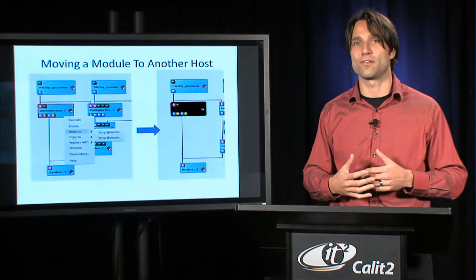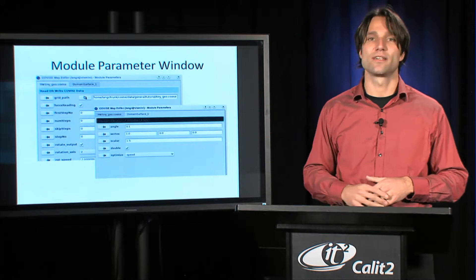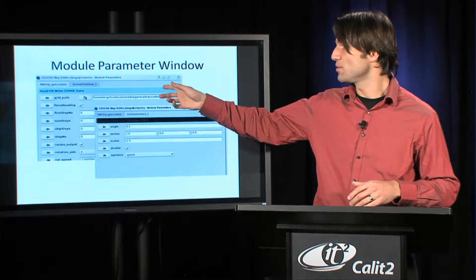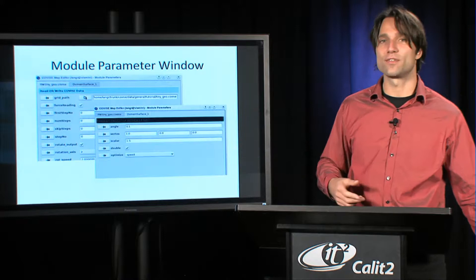If you open the module parameter window for any given module, you'll find with different colors the information about where this module is actually running. If you see a blue color under the name of the module, you know it's a local module. If it's a green one, you know it's a remote module. And you can set and change the parameters of the remote module in just the same way as you change them for your local machine.